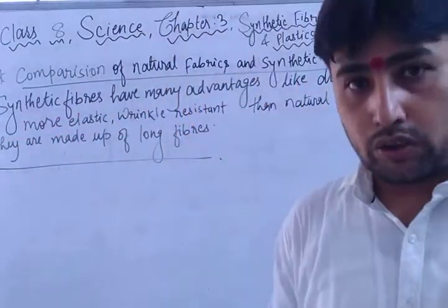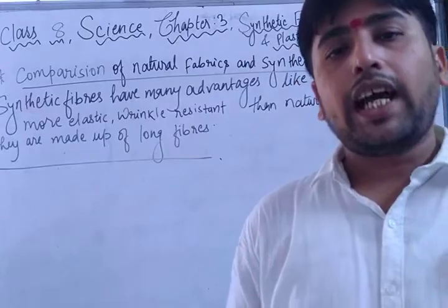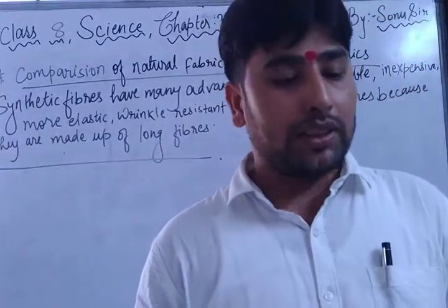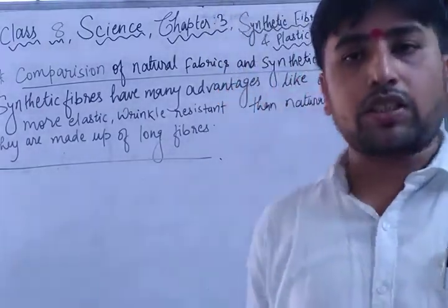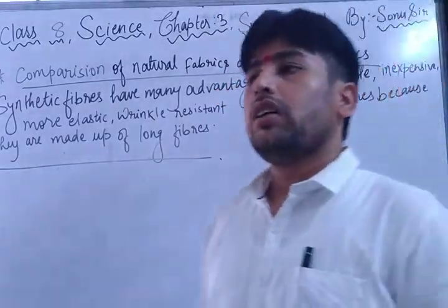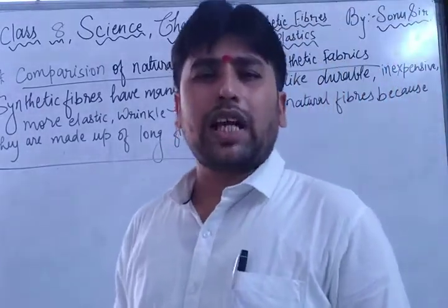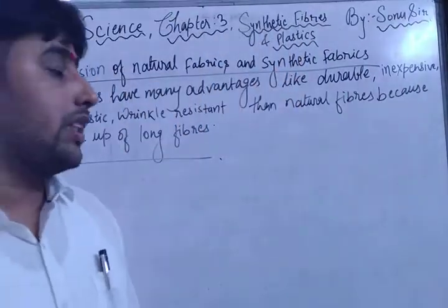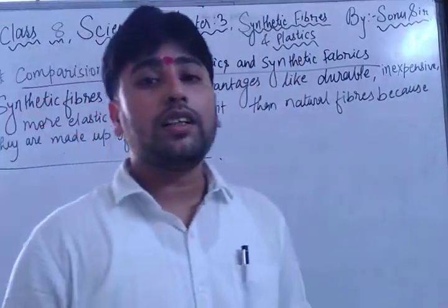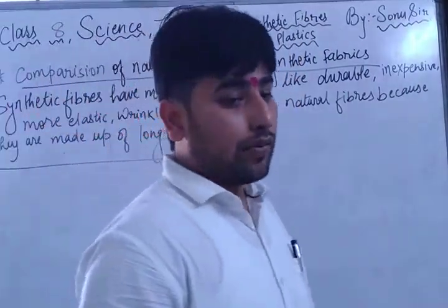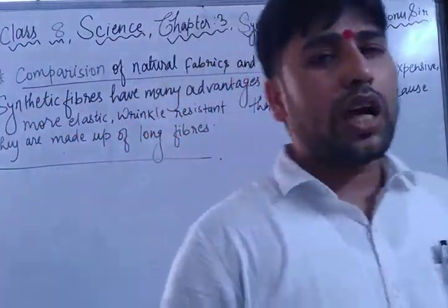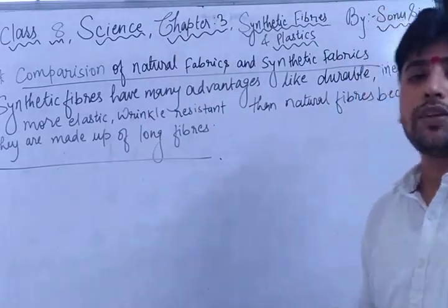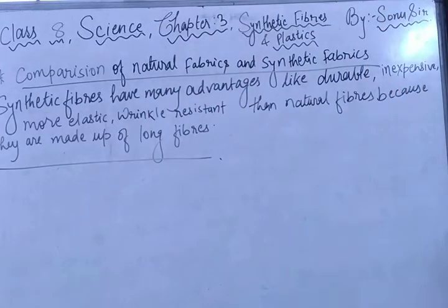What are natural fabrics? A fabric which is obtained from plants and animals is called a natural fabric. And a fabric which is obtained in chemical industries — just with the help of chemicals — is called a synthetic fiber. If you have any doubt about natural fiber or synthetic fiber, you can ask me.